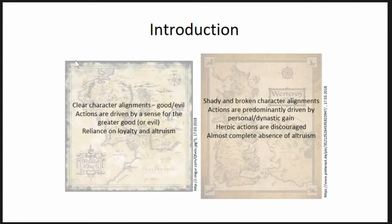From the pen-and-paper role-playing perspective, the Lord of the Rings has clear character alignments — people are either good or evil, with few characters in a gray area. You don't have that in Westeros; people have a shady or broken character alignment, sometimes chaotic evil. Actions are driven by personal or dynastic gain, not the greater good. If you perform a heroic action, it's usually discouraged because you're usually killed. In the Lord of the Rings, if you perform lots of heroic actions, you might eventually become a great king. So we have this almost complete absence of altruism, which probably drives lots of human actions, but if we model that, it gets very, very different.